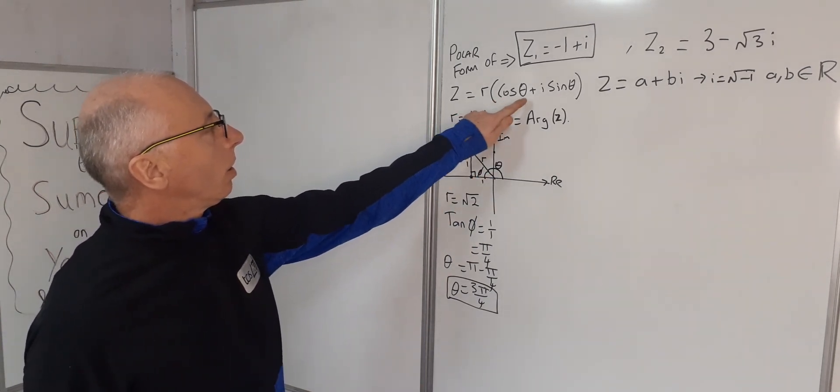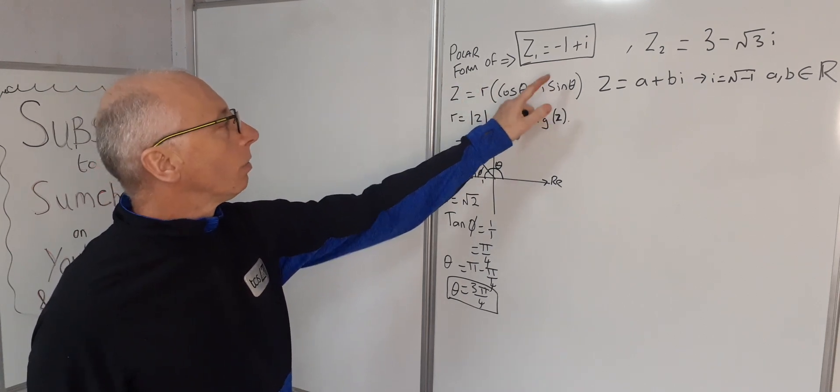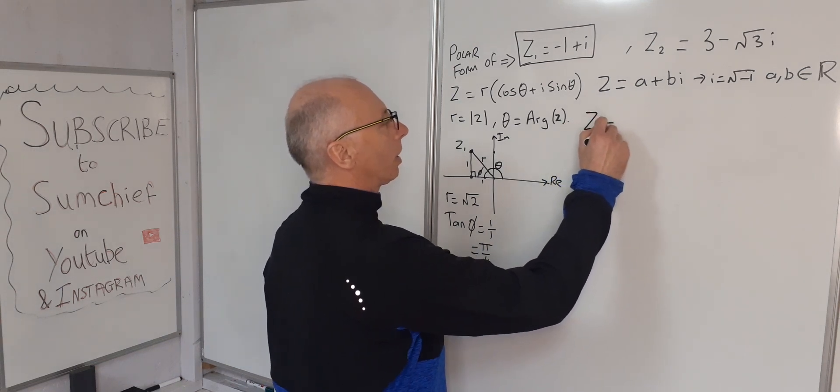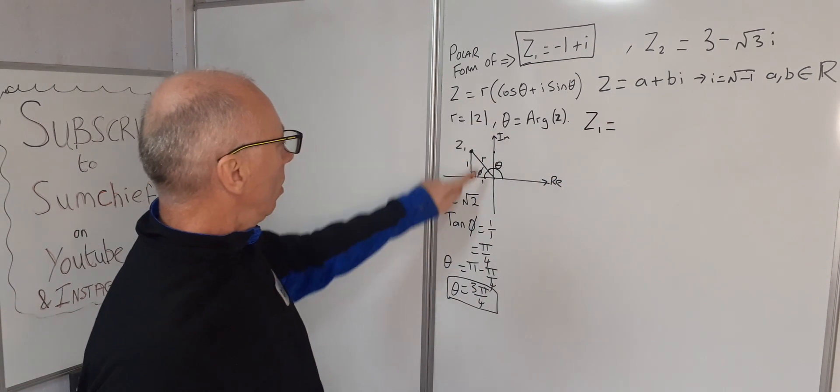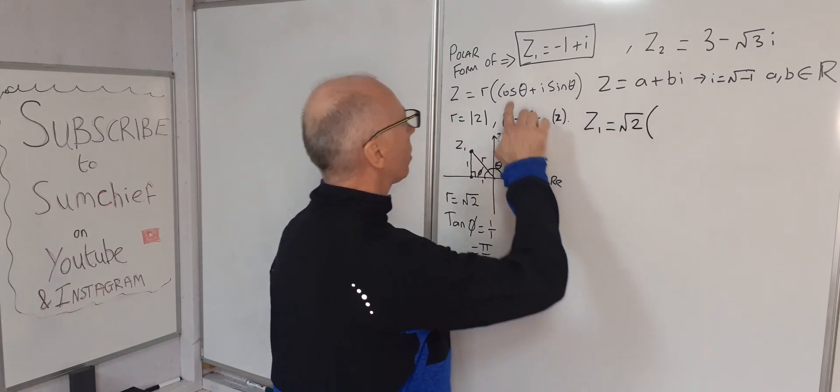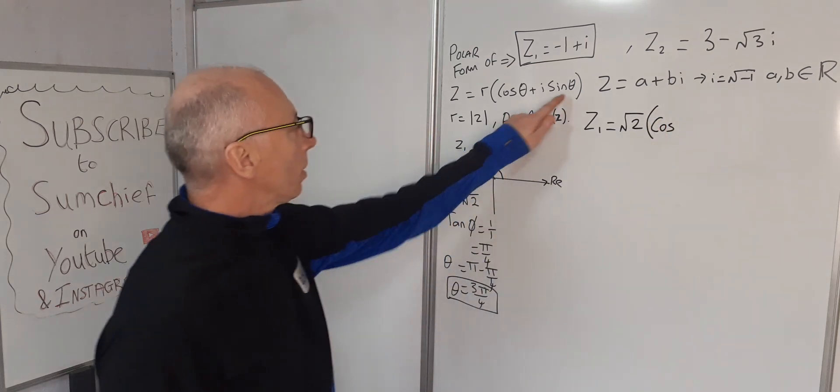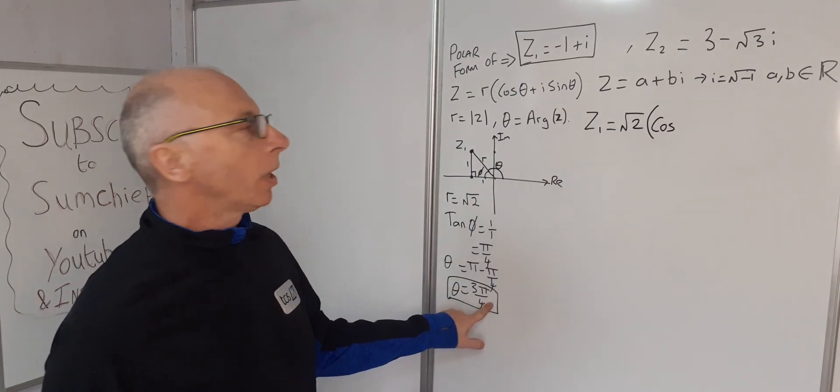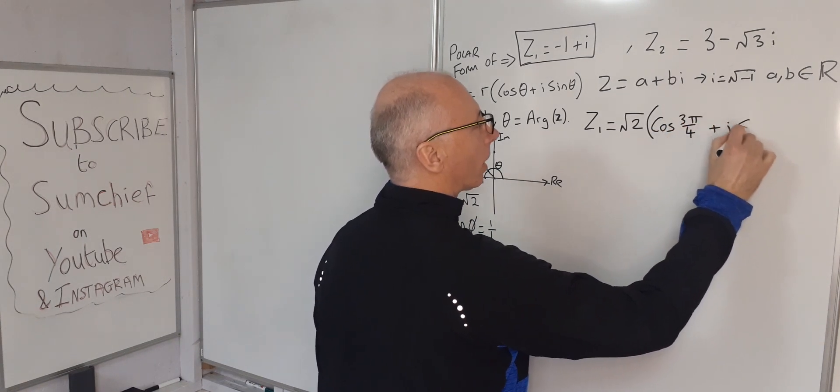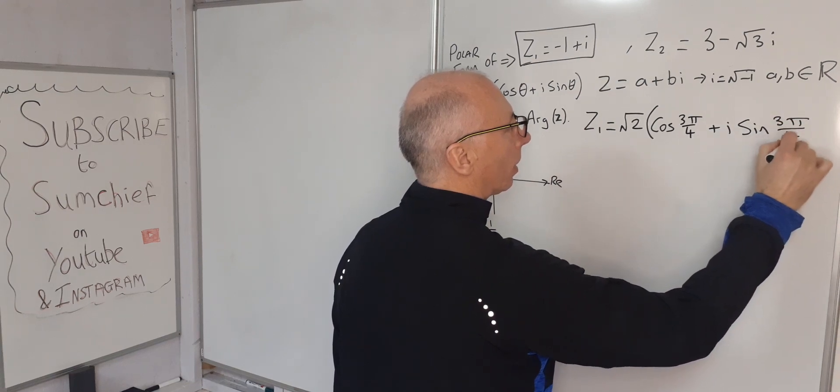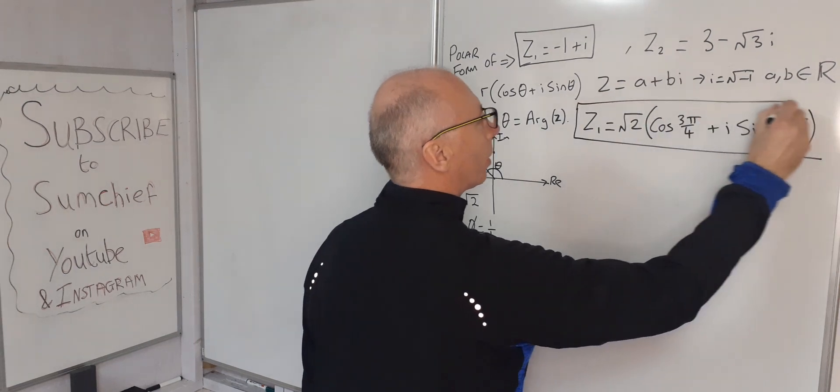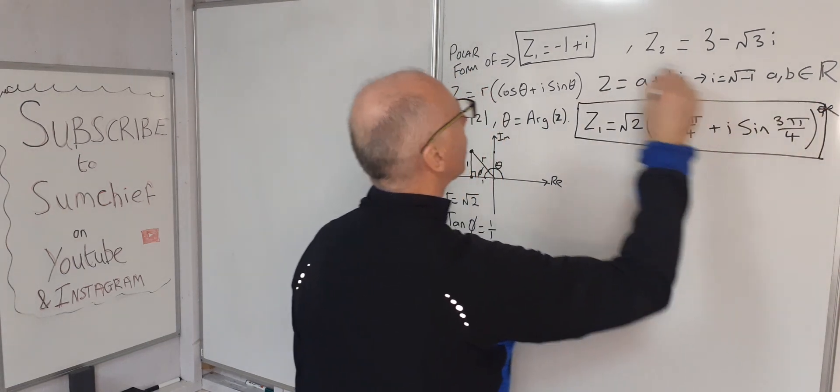Now we've got our r and our θ, so we can write this down in polar form. z₁ = √2(cos(3π/4) + i sin(3π/4)). That's z₁ in polar form.